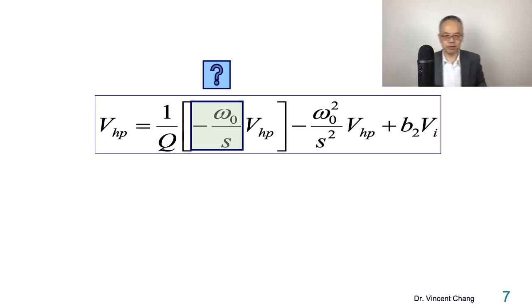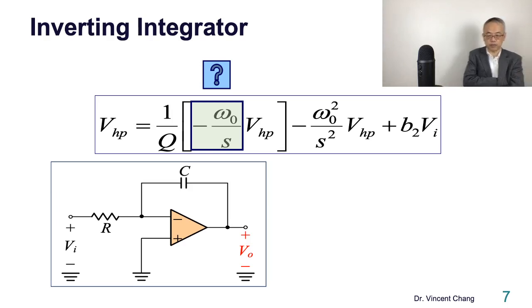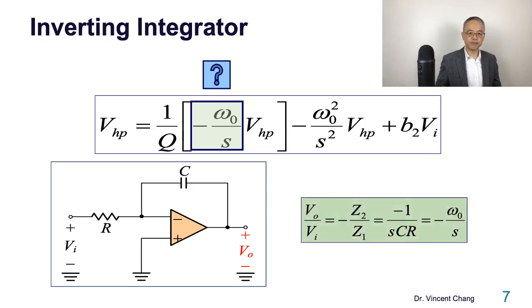What does this highlight remind you of? Negative omega 0 over S. You're supposed to be very familiar with this. It reminds you of inverting integrator. Negative Z2 over Z1. So negative 1 over SC divided by R. That's 1 over SRC. Omega 0 is defined as the inverse of the time constant. So the first integrator. And it happens the second time. So you need another integrator. Two integrators.